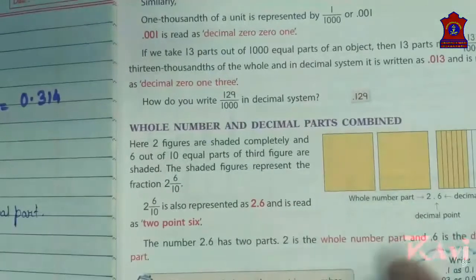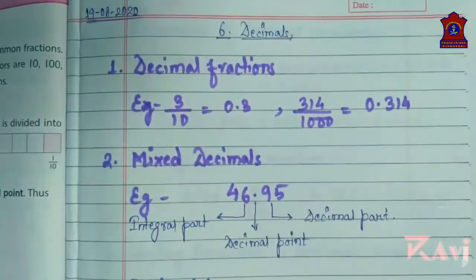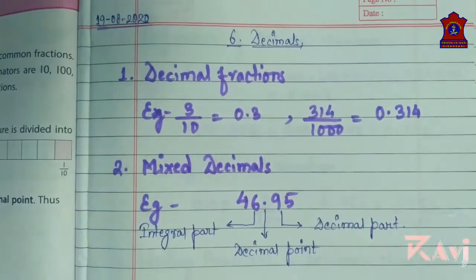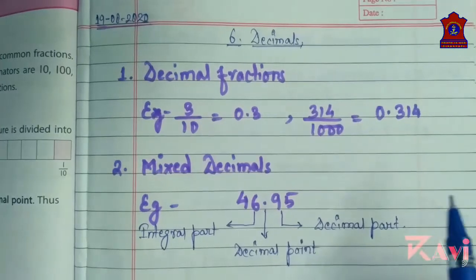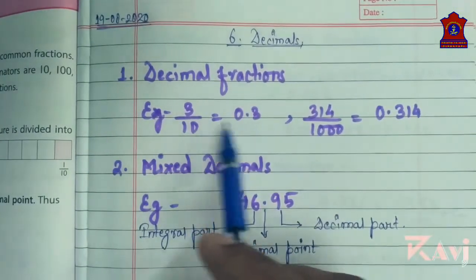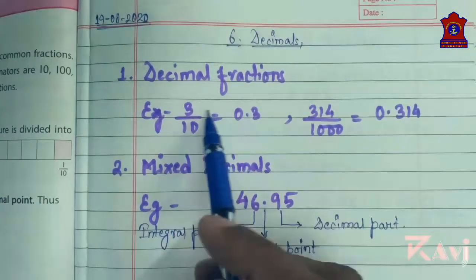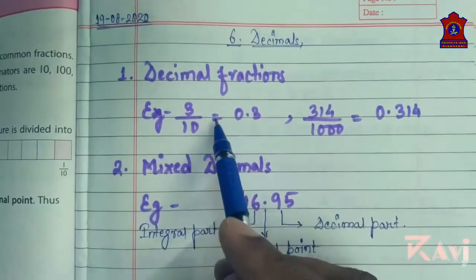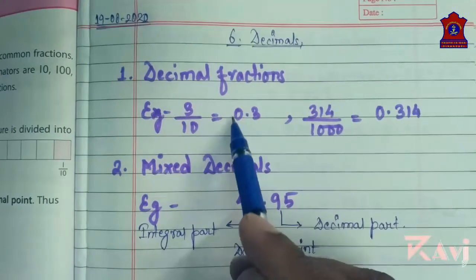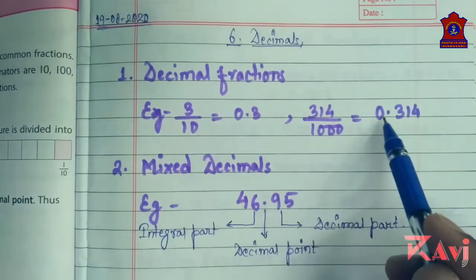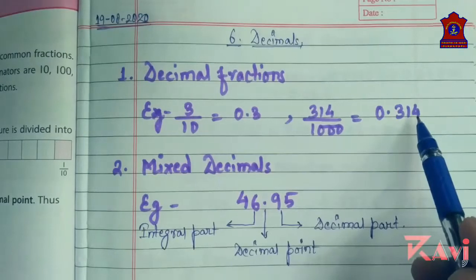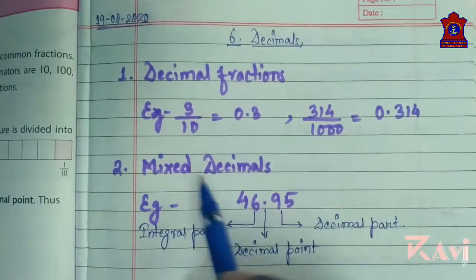First, you will be learning about the various things in decimals. First is decimal fractions. Decimal fractions can be represented as decimal numbers. Here you can see that 3/10 is written as 0.3, so 0.3 is the decimal number. Similarly, 314/1000 can be written as 0.314. So these are what decimal fractions are.